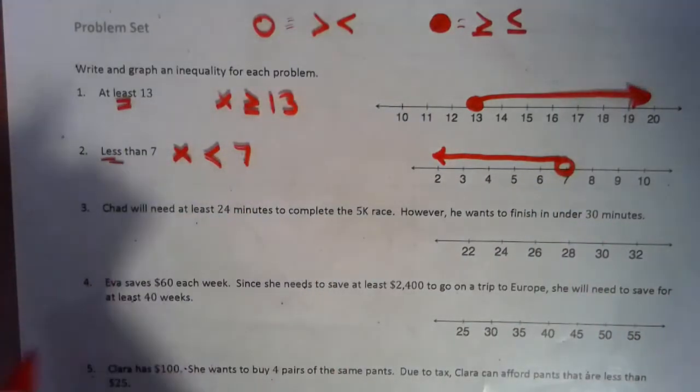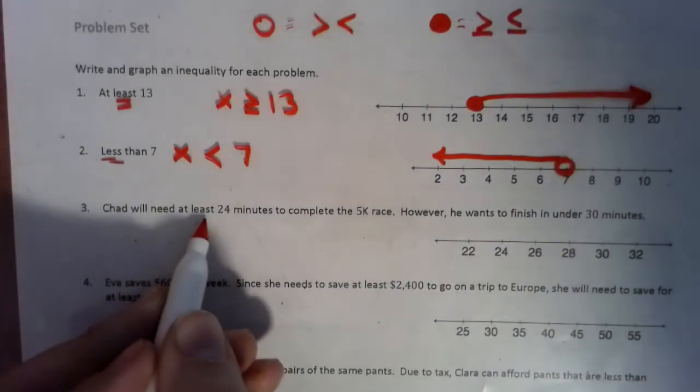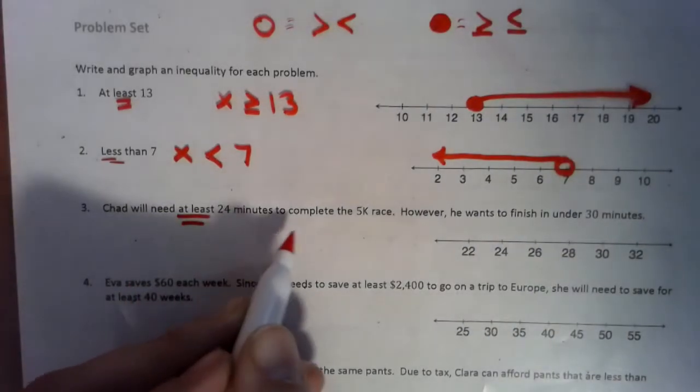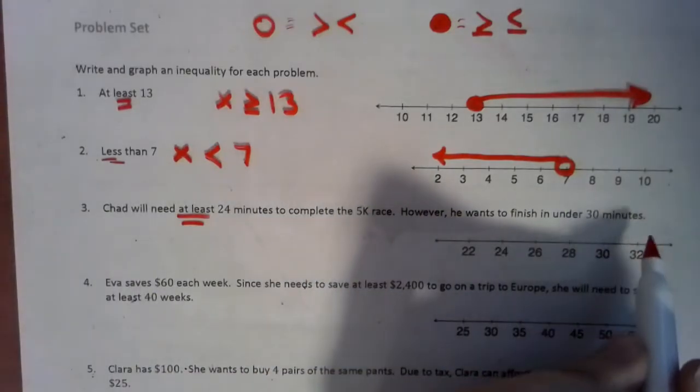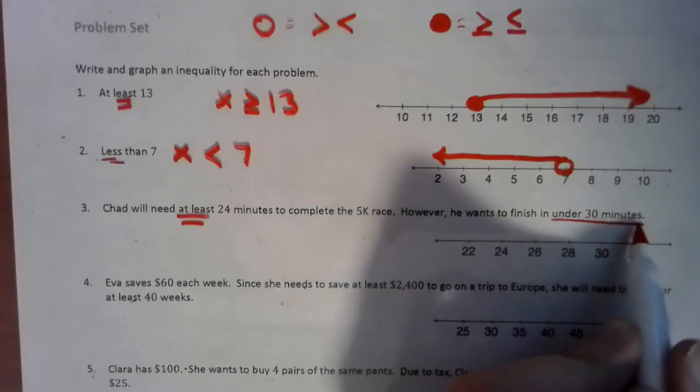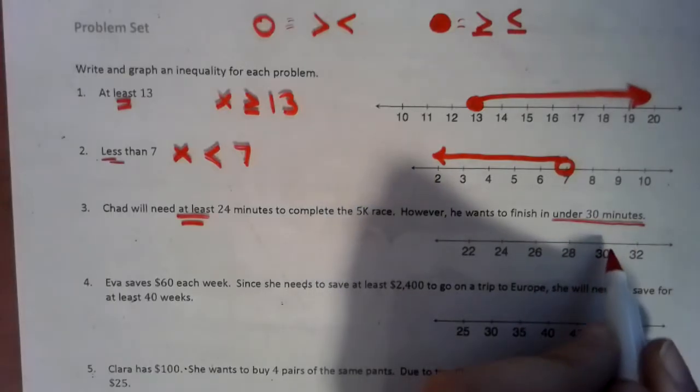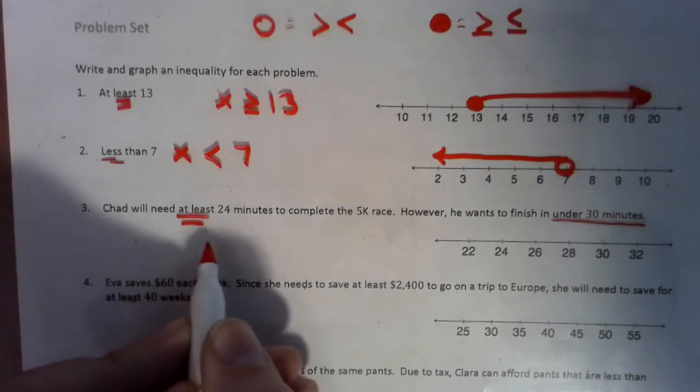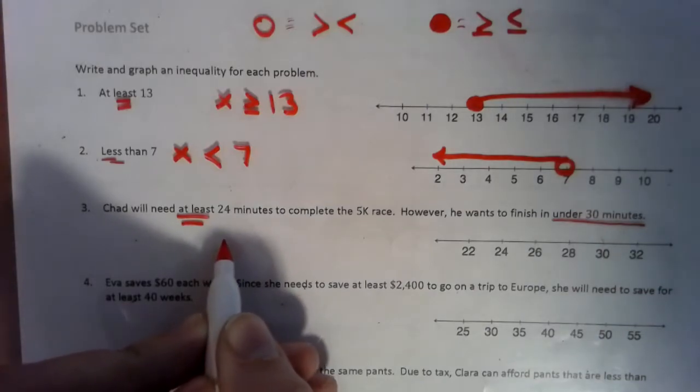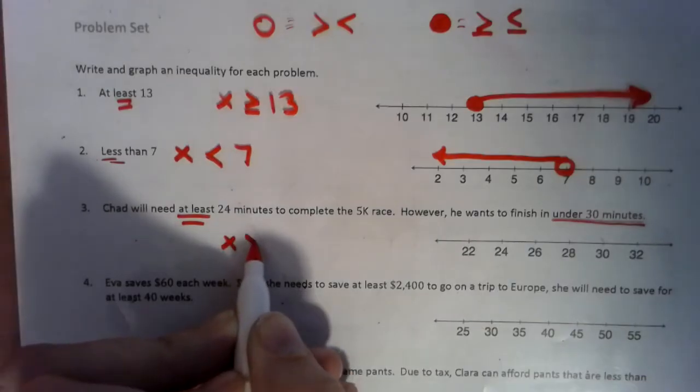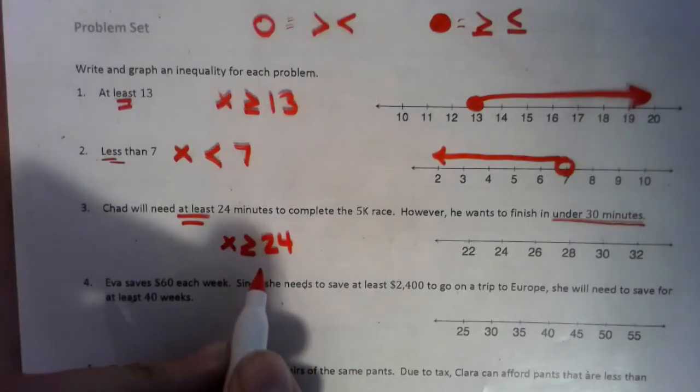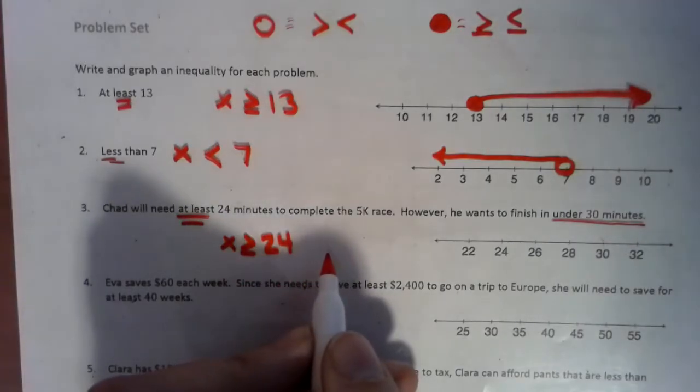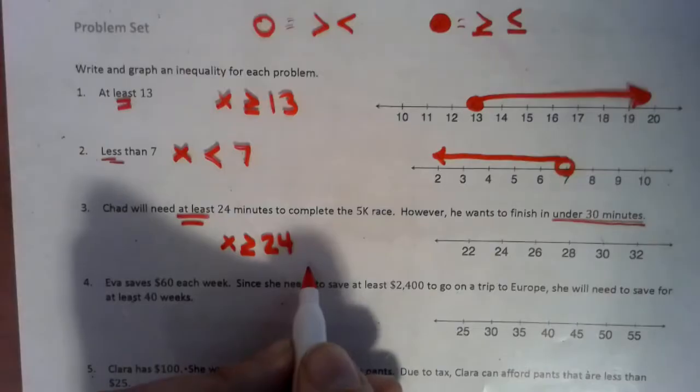Chad will need at least 24 minutes to complete the 5K race, and he needs to do it in under 30. So under 30 means it's got to be less than 30. So Chad needs at least, so the number has to be greater than or equal to 24, but it has to be under 30.